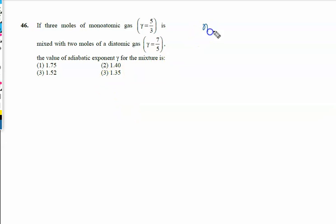If three moles of monatomic gas, n₁ equals three moles and gamma is given to us five by three. Now all of you know monatomic gas has degree of freedom that is three, is mixed with two moles